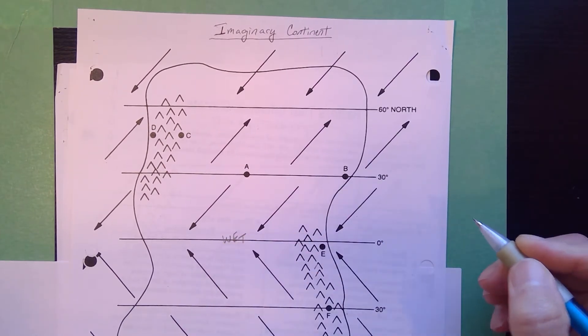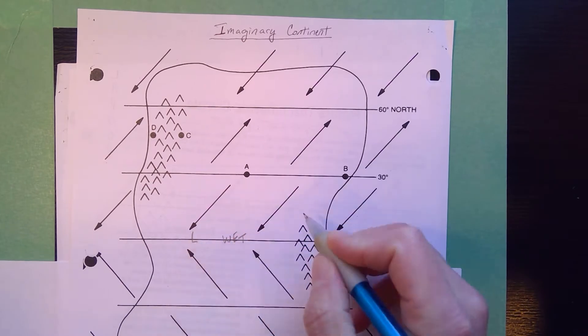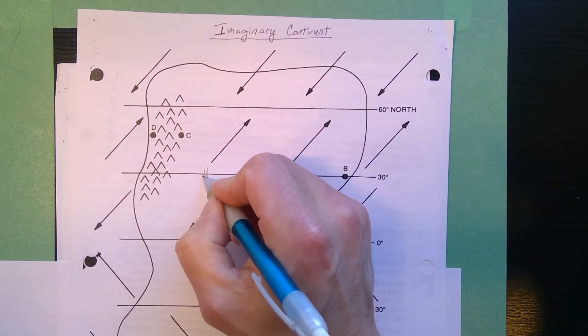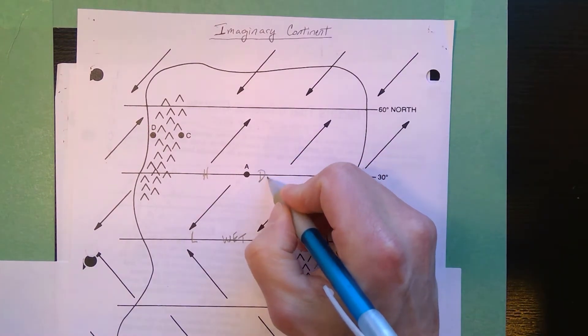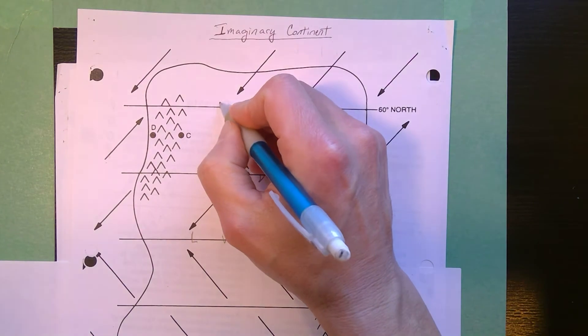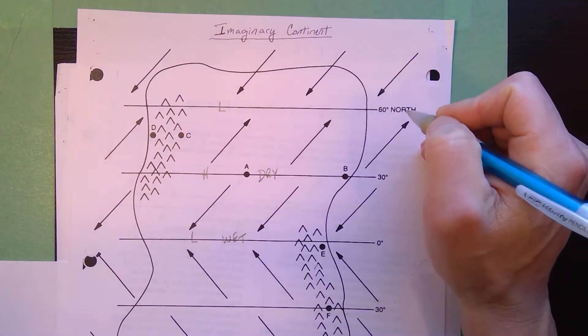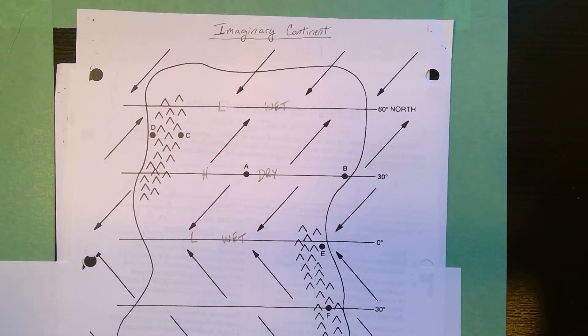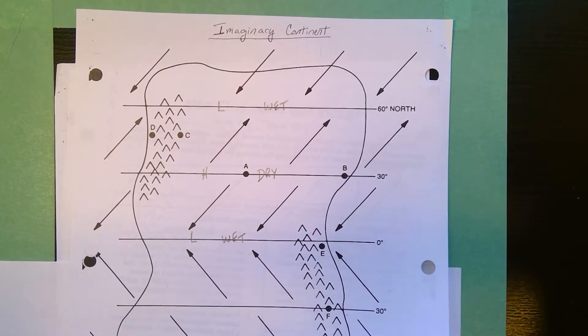The first thing I do before I even start looking at the questions is I would look at this. The equator is a low pressure belt. I could put an L there, but it's a low pressure belt and it's wet. 30 degrees north is high pressure and that gives you dry air because the air is sinking. You've got another low pressure belt at 60 north. Low pressure belts are wet where the winds converge and the air rises.